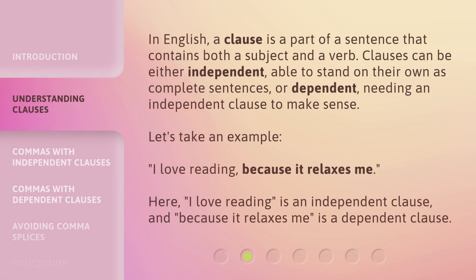In English, a clause is a part of a sentence that contains both a subject and a verb. Clauses can be either independent — able to stand on their own as complete sentences — or dependent, needing an independent clause to make sense. Let's take an example: 'I love reading, because it relaxes me.' Here, 'I love reading' is an independent clause, and 'because it relaxes me' is a dependent clause.